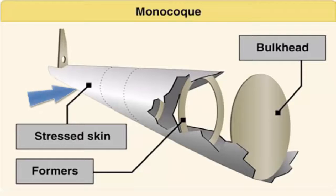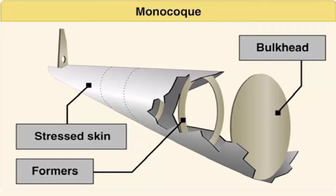Monocoque construction uses stressed skin to support almost all aerodynamic loads. Although very strong, monocoque construction is not highly tolerant to deformation of the surface. For example, an aluminum beverage can supports considerable forces at the ends of the can, but if the side of the can is deformed slightly while supporting a load, it collapses easily. Because most twisting and bending stresses are handled by the external skin rather than by an internal framework, the need for internal bracing was eliminated or reduced, saving weight and maximizing space.